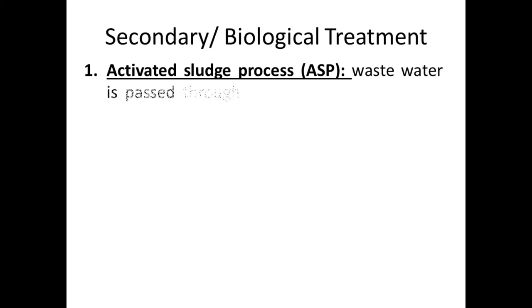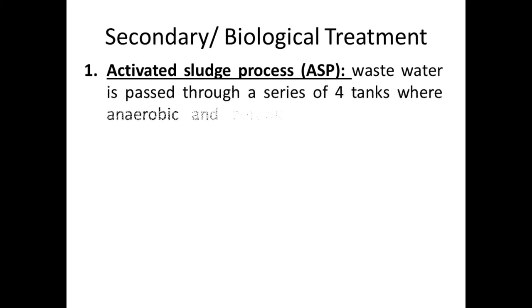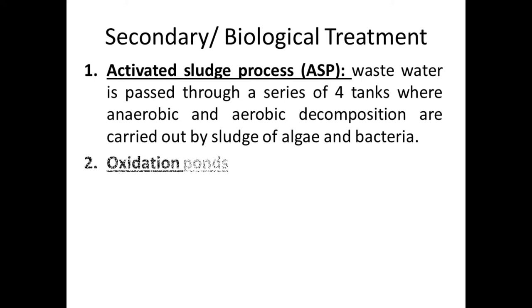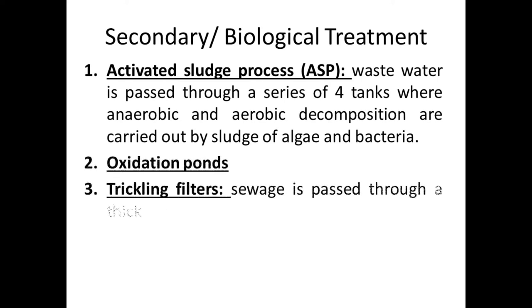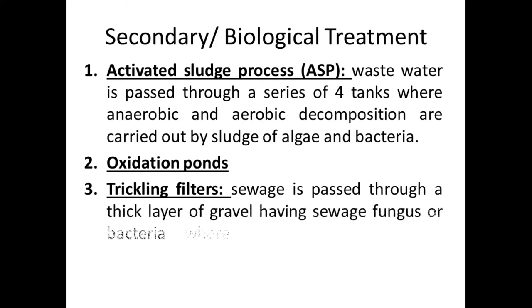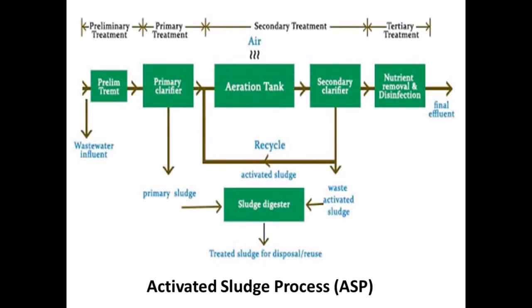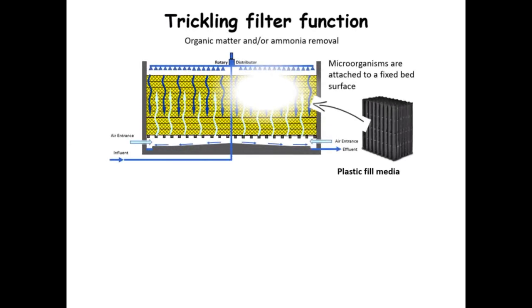Secondary or biological treatment involves the activated sludge process, where wastewater is passed through a series of four tanks where anaerobic and aerobic decomposition are carried out by sludge of algae and bacteria. The sludge is reused for treatment of water, and the remaining sludge is used as fertilizer in agricultural fields. Other methods include oxidation ponds, trickling filters — where sewage is passed through a thick layer of gravel with sewage fungi or bacteria — and septic tanks. This is the schematic diagram of the activated sludge process and of trickling filters.